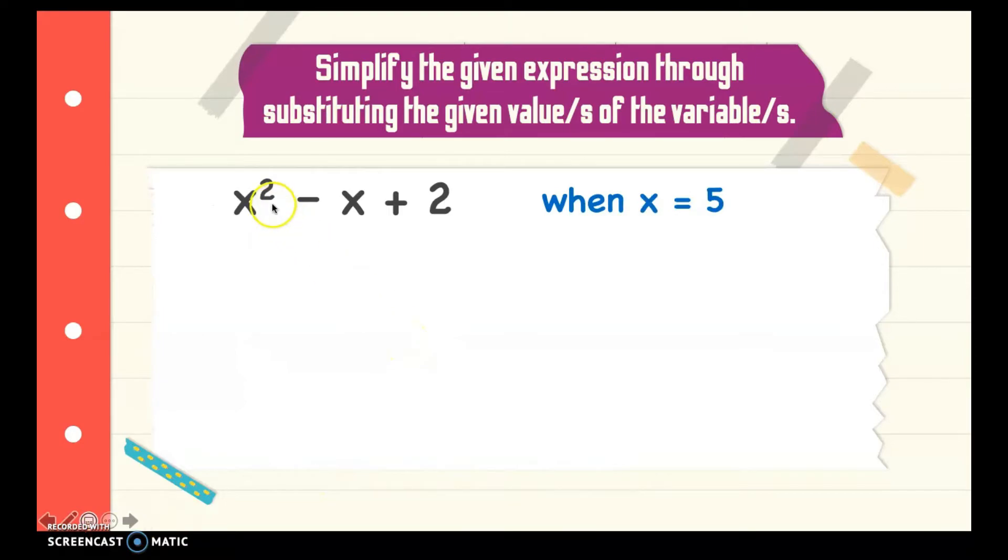Next, we have x squared minus x plus 2. What is the value of the expression when x is equal to 5? We replace x by 5. We have here 5, the exponent which is 2. Minus 5 for the value of x plus 2. Following the order of operation, we need to perform the exponent which is 5 squared.